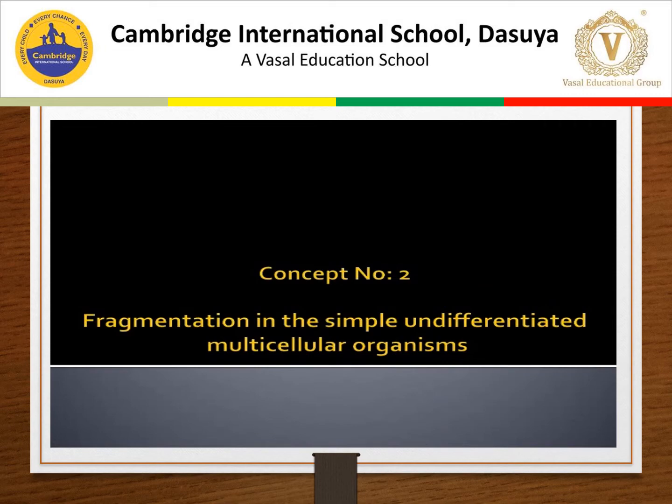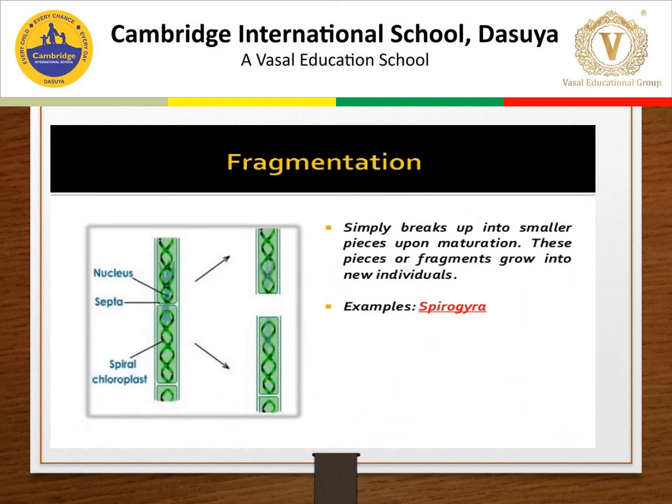Fragmentation is a process of breaking up of the body of an organism into two or more fragments, each of which grows into a new individual. It is a common method of asexual reproduction in multicellular organisms with simple organization. For example, Spirogyra breaks into small fragments and these fragments grow into new individuals.